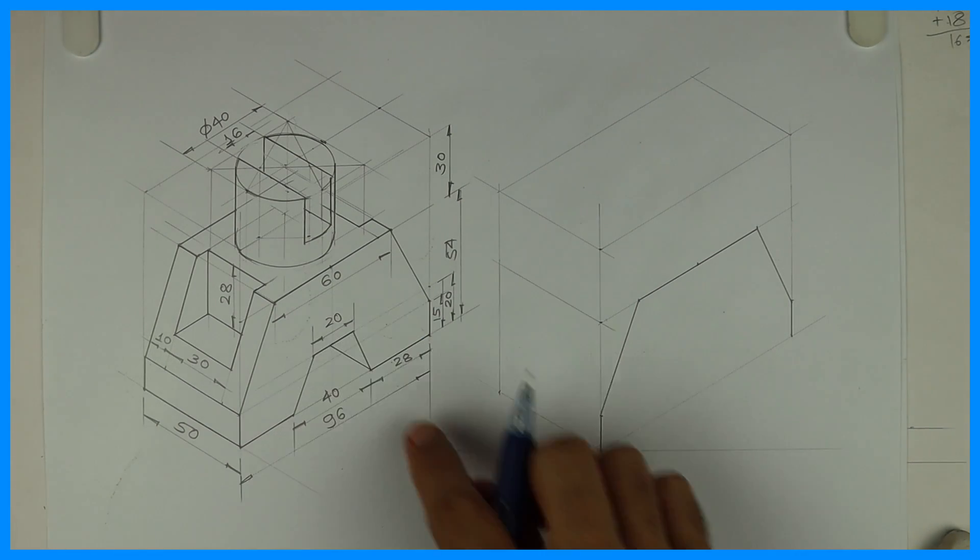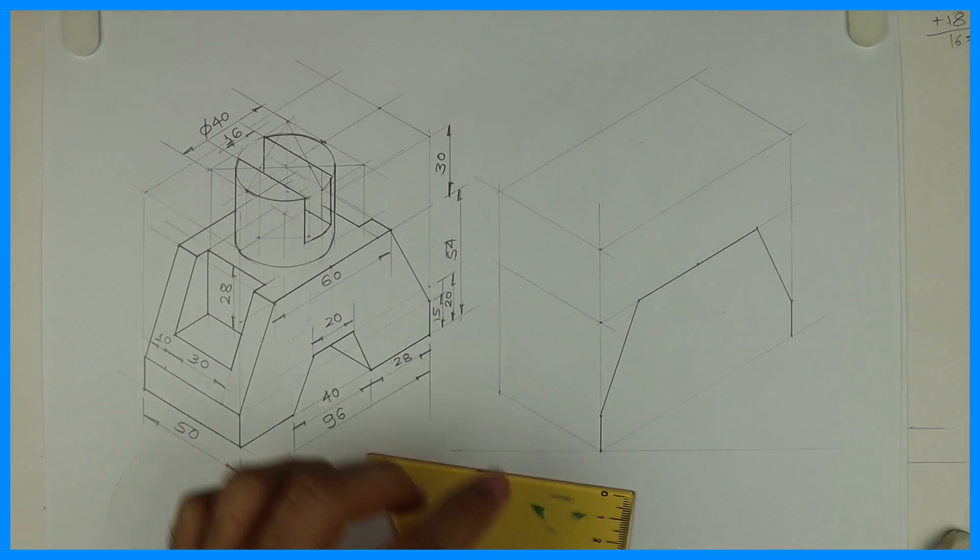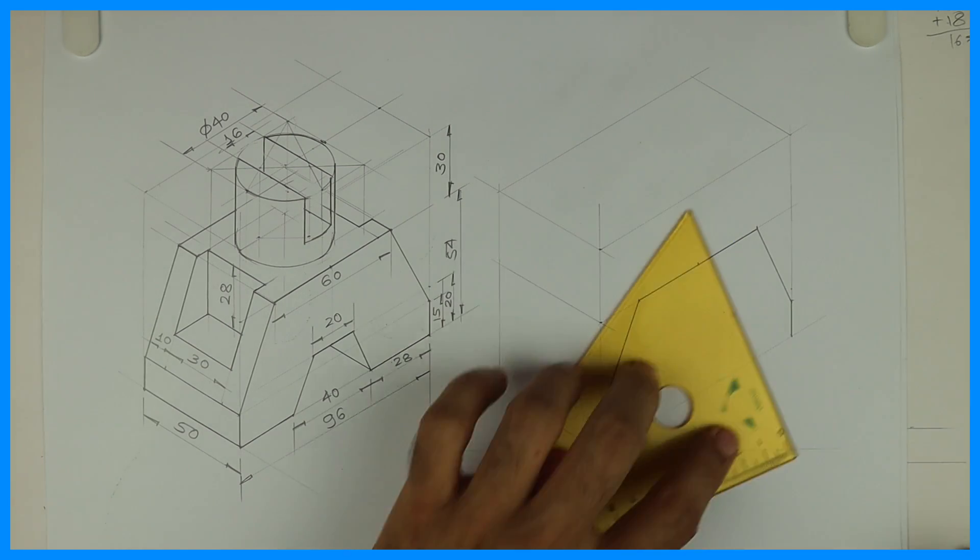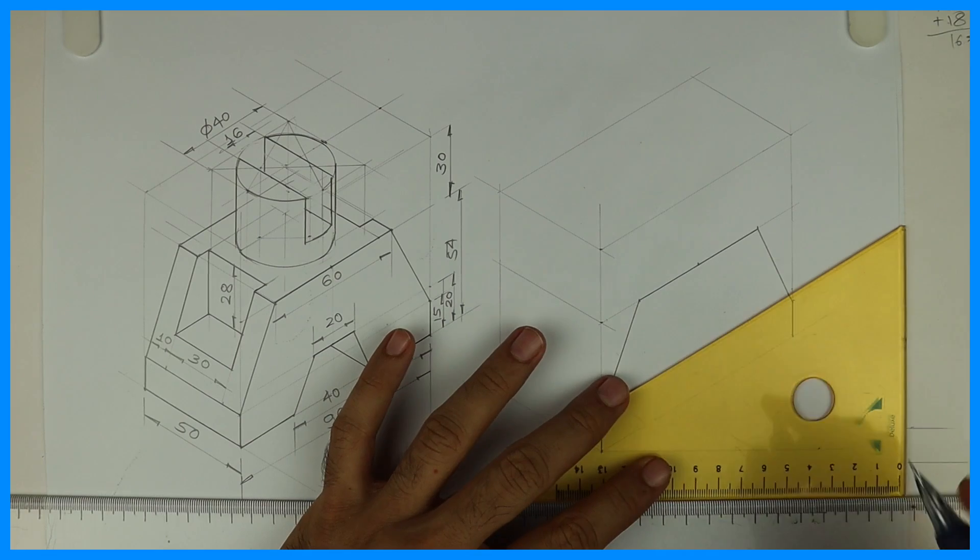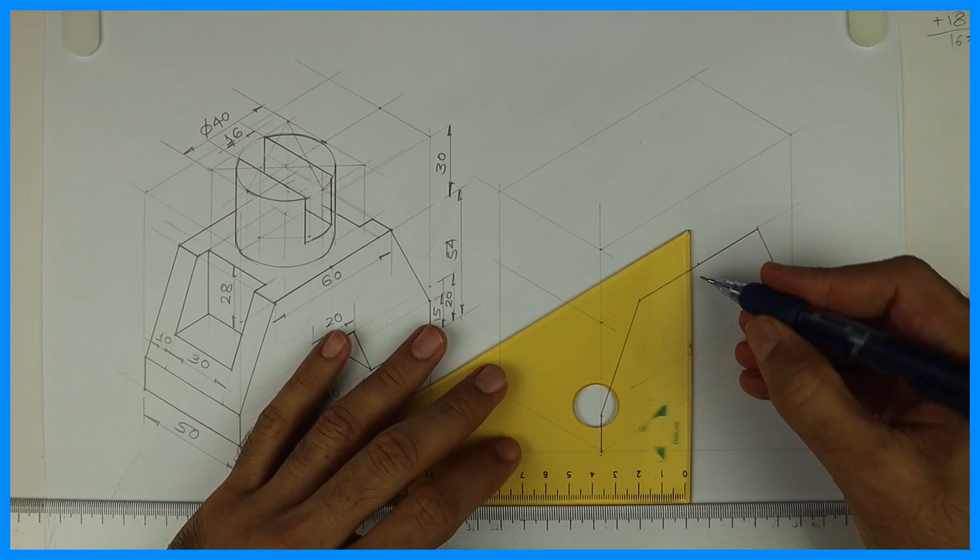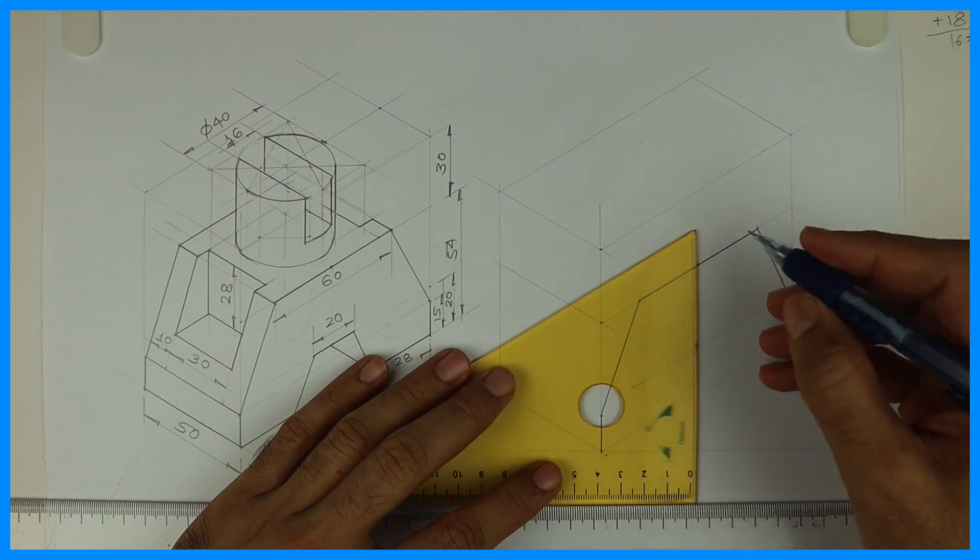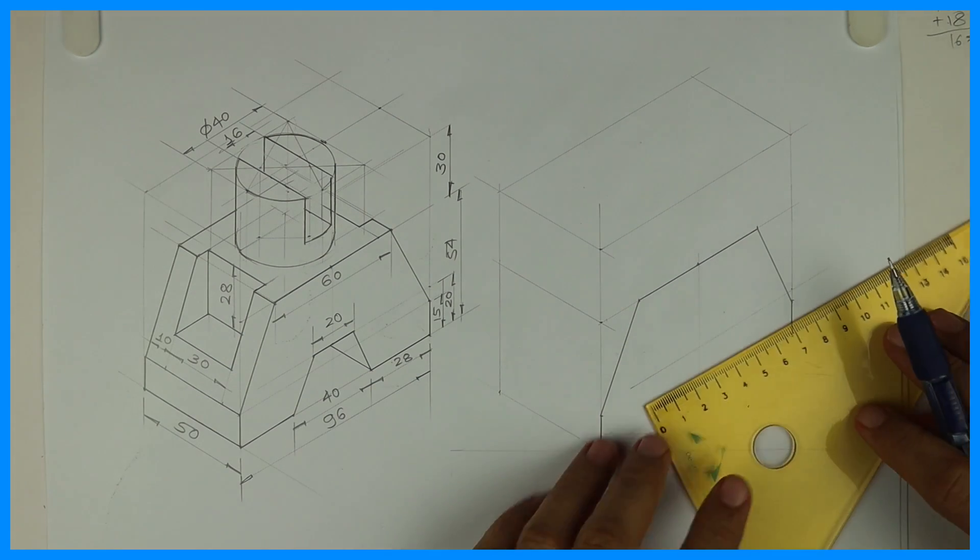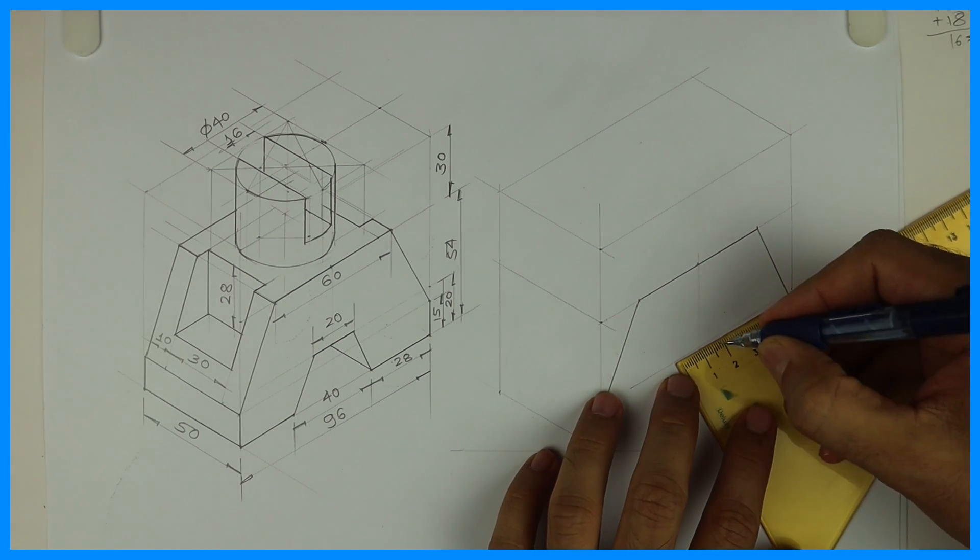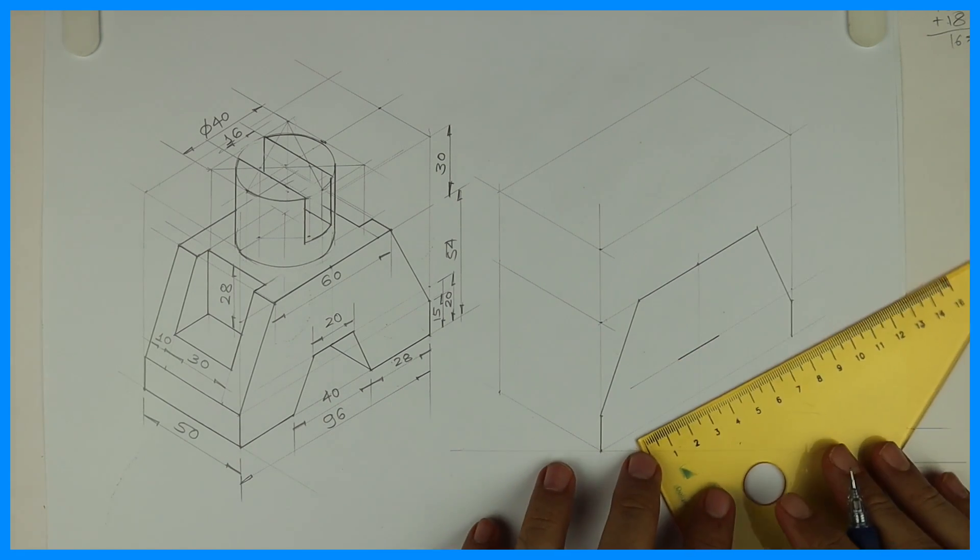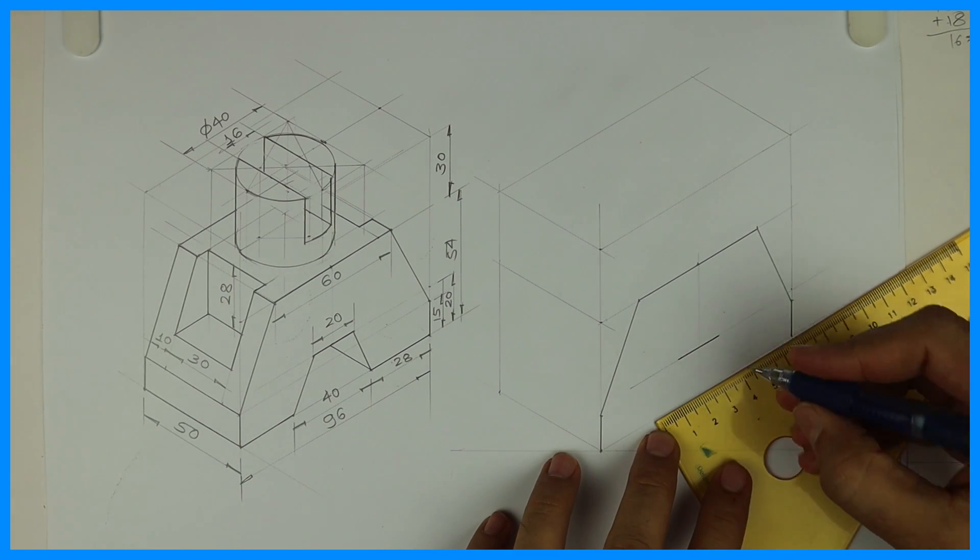After that, we need to draw this part. How much is this height? 20. So we'll mark 20. From center point you go down. And from center you can take 10-10, and again from the center you can take 20-20.